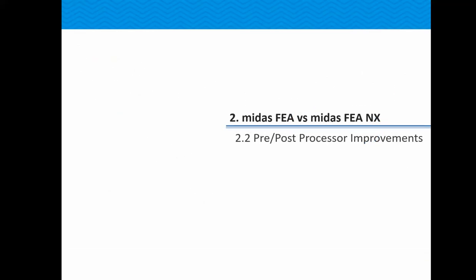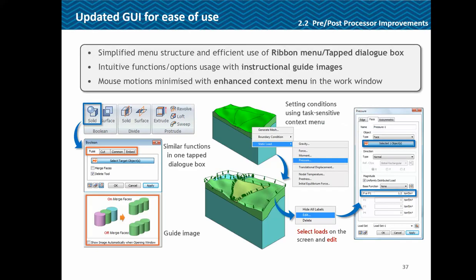Coming to differences in the pre and post processors: we are moving from the context menu to a ribbon-based menu which is more intuitive, with instructional guide images. Similar functions are grouped under the same tab. For each tab there is a guide view — for example, if you are using the fuse option, a guide shows what the merge faces option does: when merge faces is ON, three fused solids result in one clean merged solid; when OFF, the merged solid retains internal faces as well.